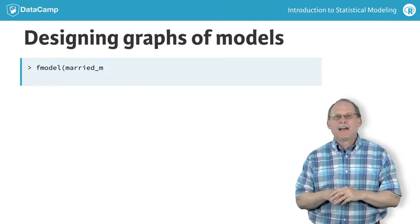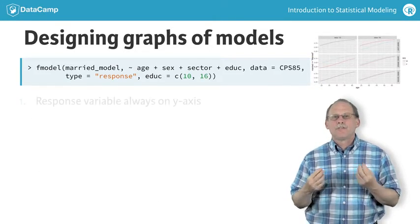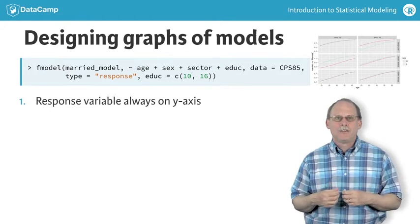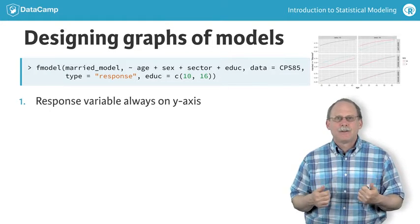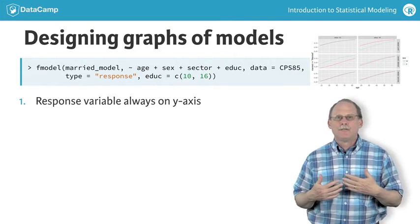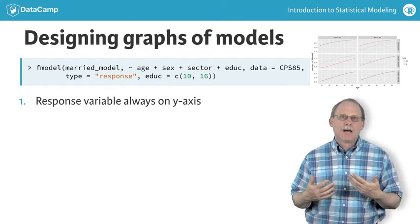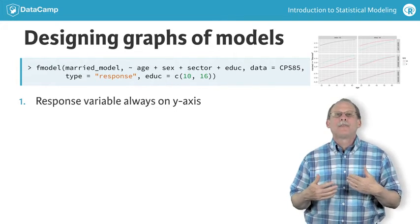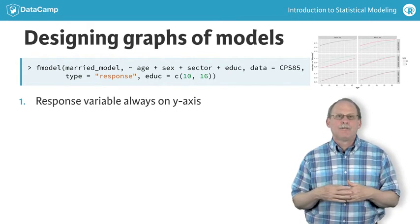Let's talk about how to design such graphs. First, the response variable will always be on the y-axis. This honors convention and helps the viewer of the graph to orient him or herself. If the response is categorical, we'll plot the probability of the first level.